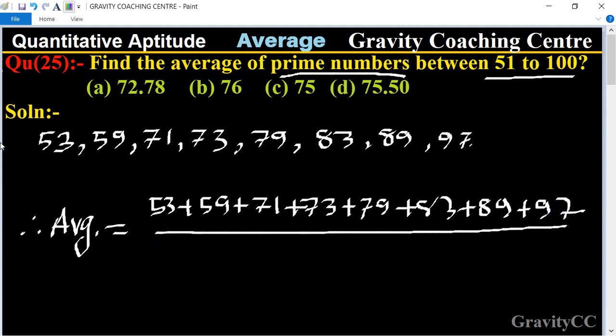So here there are 1, 2, 3, 4, 5, 6, 7, 8 numbers, equal to the total 604 upon 8. So 604 divided by 8, we get 75.5, which is the required answer.